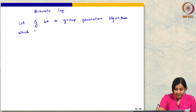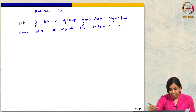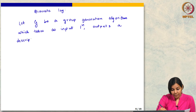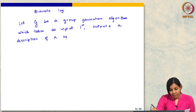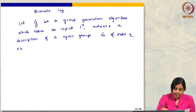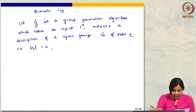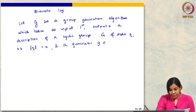This algorithm takes as input n and outputs a description of a cyclic group G of order q such that the size of q is n bits, and a generator g.